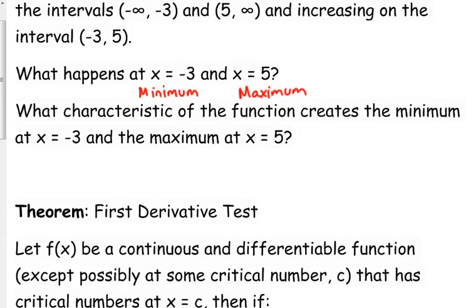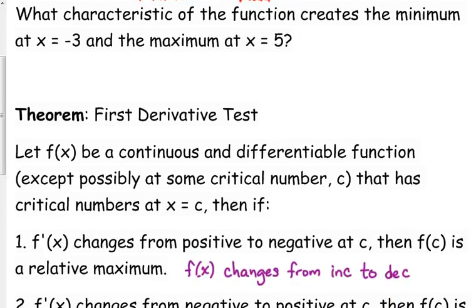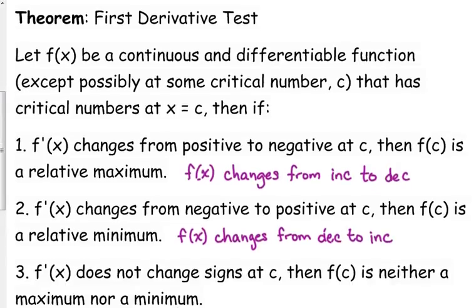So the first derivative test is this: you've got to have a continuous and differentiable function. That's always the case, except sometimes at your critical numbers you're not differentiable — sharp points, vertical tangent lines, things like that.